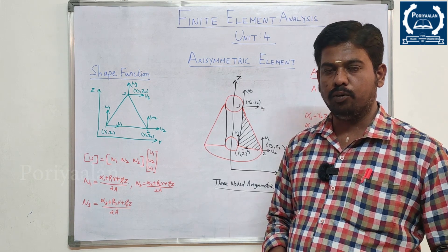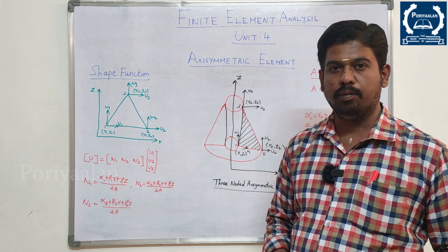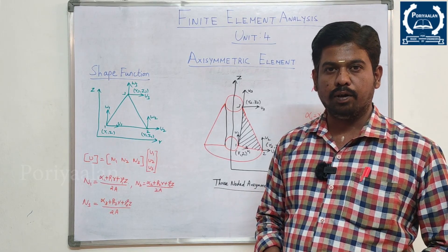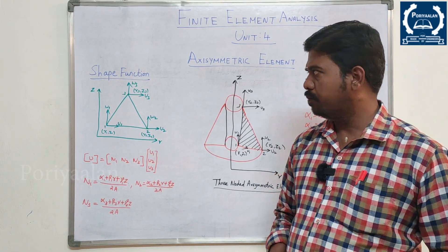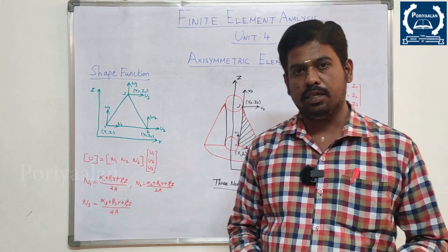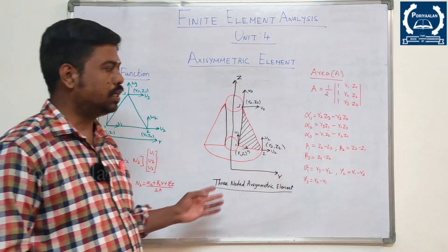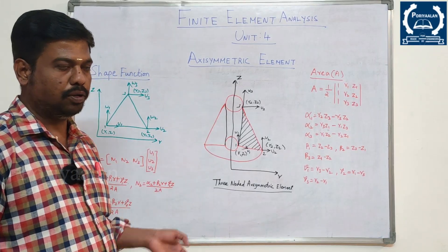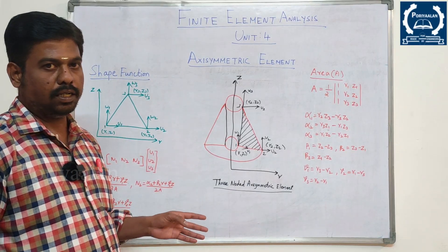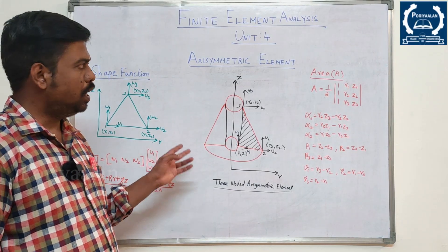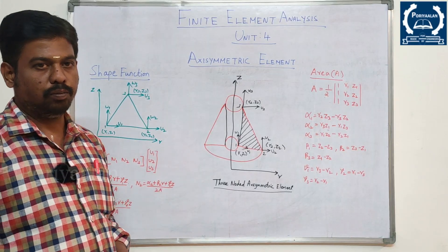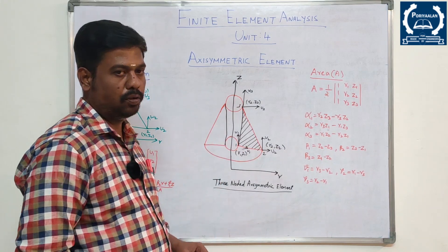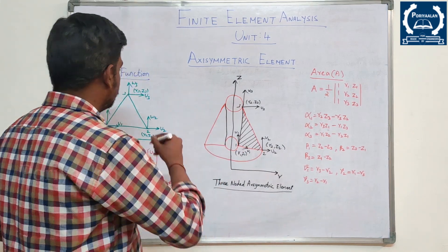Some two problems are more than enough for the Axisymmetric element. Maximum, we need to find the stiffness matrix or B matrix and the displacement matrix. Both the CST element and the Axisymmetric element are 3-noded triangular elements. CST element is the constant strain triangular element.